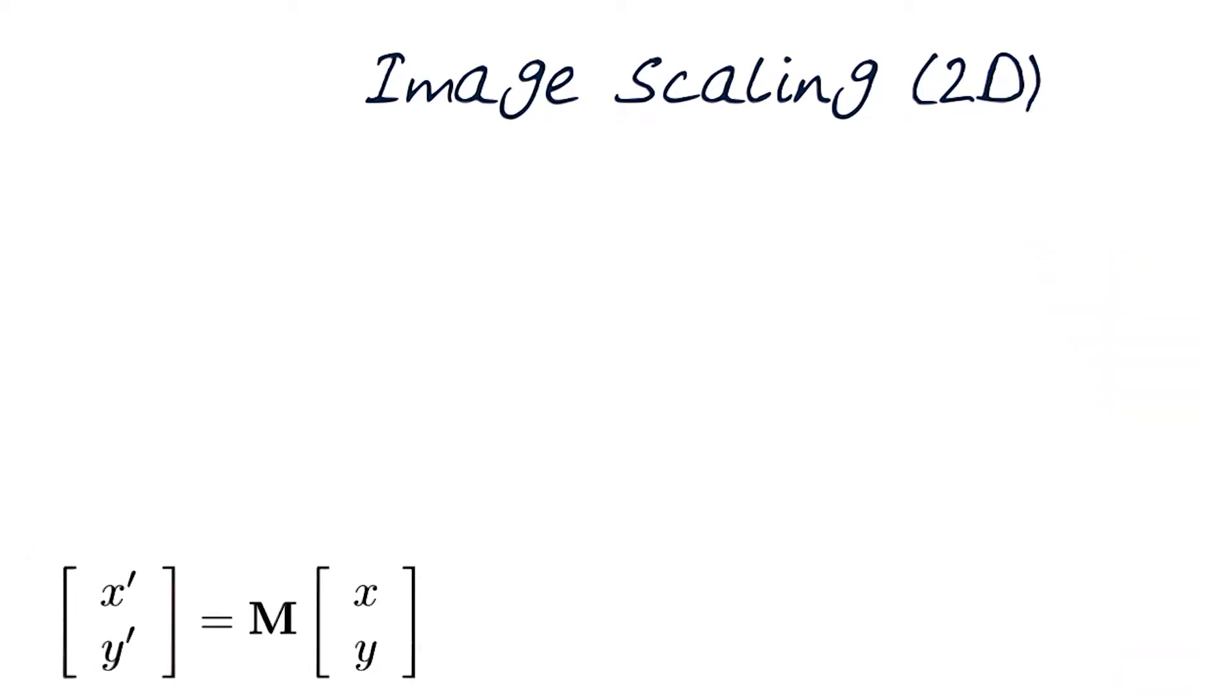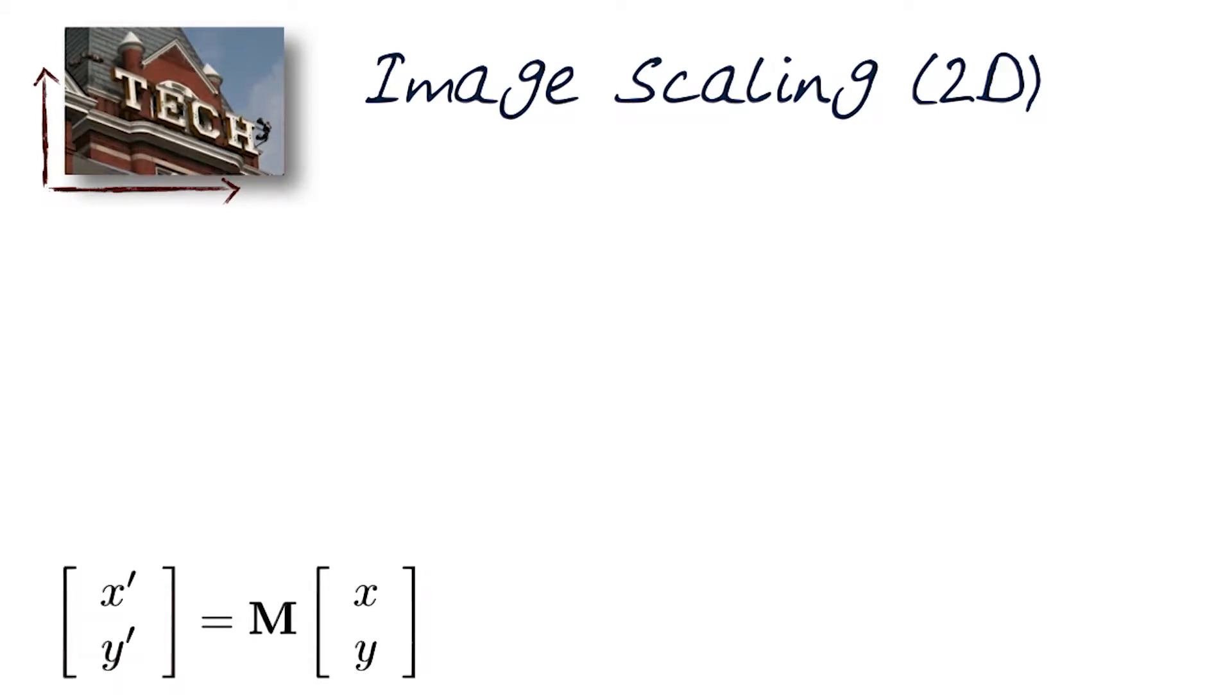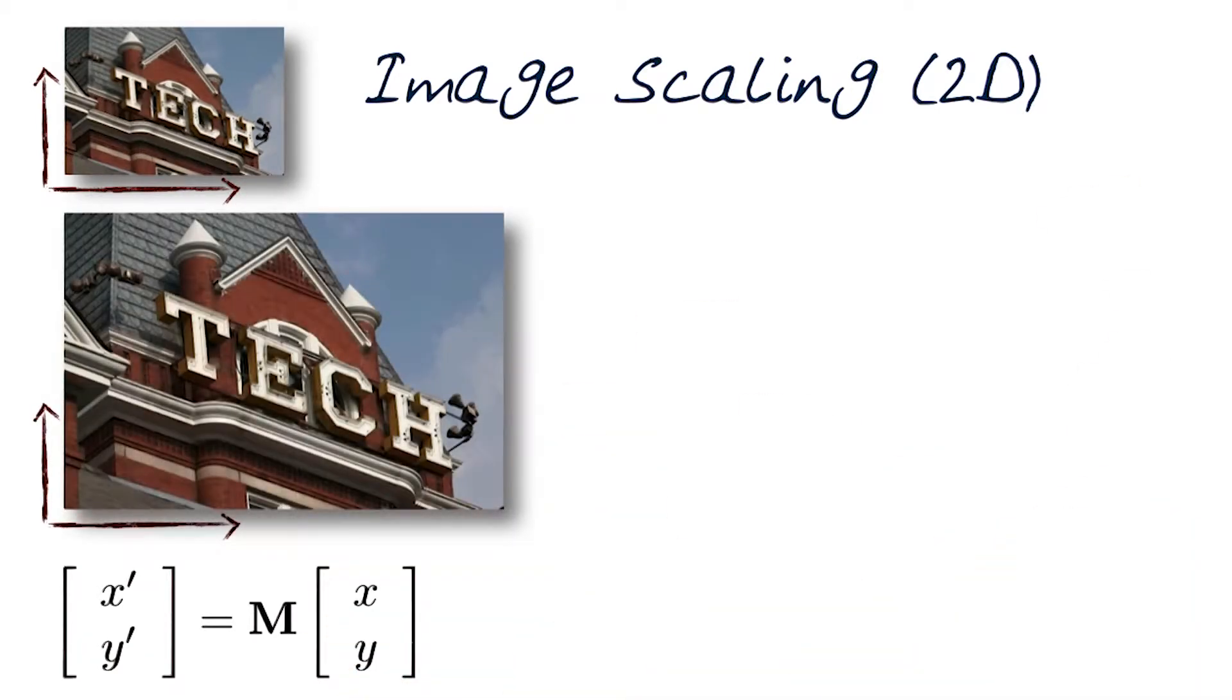First, let's look at the simple example of scaling an image in two dimensions, which basically means I have an image here, and I want to generate another image. And in this case, this image is twice as big.